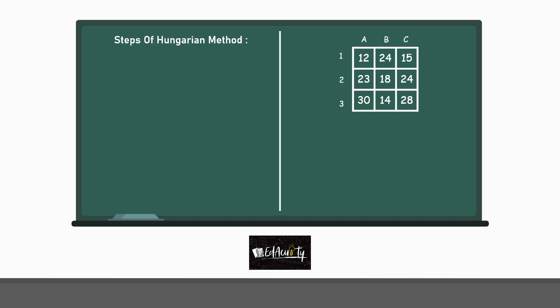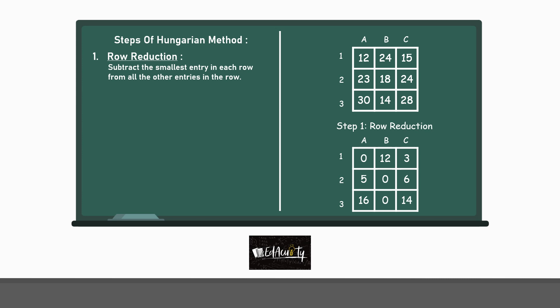Steps of Hungarian method. Step 1: Row reduction. Subtract the smallest entry in each row from all the other entries in the row. So, this will make the smallest entry in the row equal to 0. You can see in the first row, the smallest element is 12. So, in the matrix below, see that it is reduced to 0 when we subtract 12 from the elements of the first row. In the second row, the smallest element is 18. In the third row, the smallest element is 14. And in the same way, they are also reduced to 0 in their respective rows.